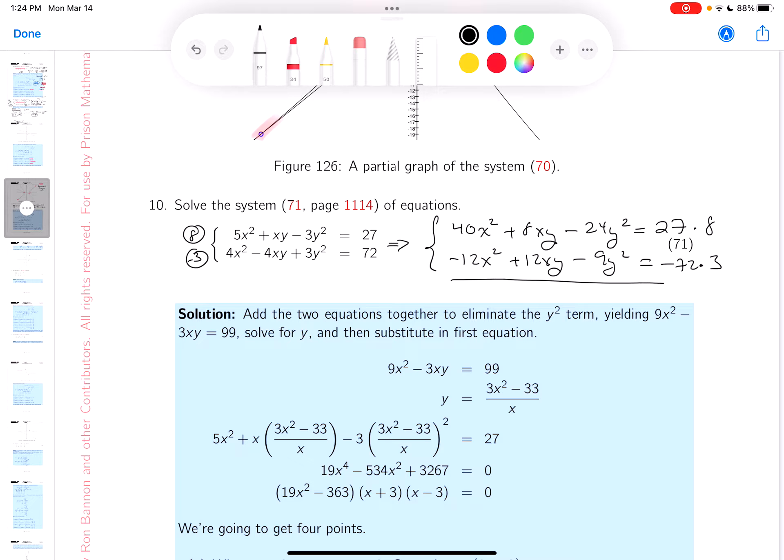And if you add those together, what are you going to get? You get 28x² plus 20xy minus 33y² is equal to 0.